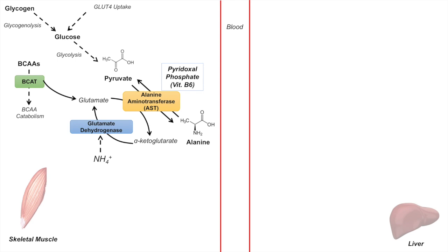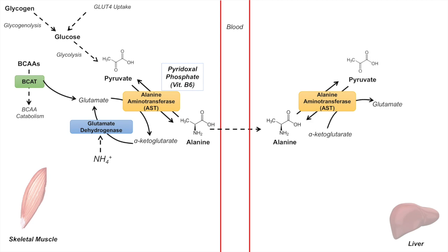Once alanine is produced in the skeletal muscle, it can be transferred into the liver and picked up by a liver hepatocyte. Once inside, the alanine undergoes a reaction with alanine aminotransferase again, but this time it produces pyruvate — the alanine donates its amino group to alpha-ketoglutarate, which becomes glutamate. The carbon skeleton of pyruvate can then undergo gluconeogenesis to form glucose, which only occurs in the liver because it has the enzyme glucose-6-phosphatase.